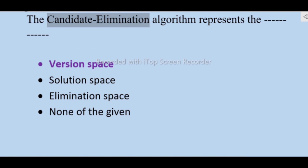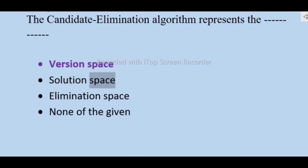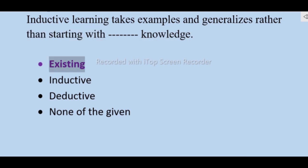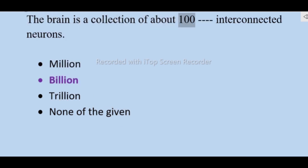The candidate elimination algorithm represents the version space — not solution space, elimination space, none of the given. Inductive learning takes examples and generalizes rather than starting with existing knowledge — not deductive, none of the given.